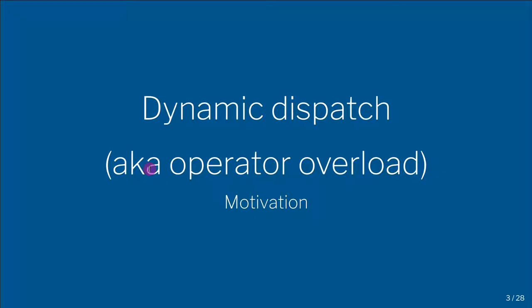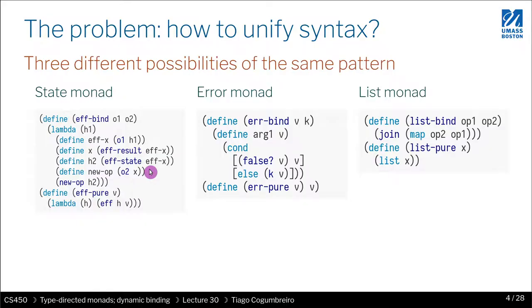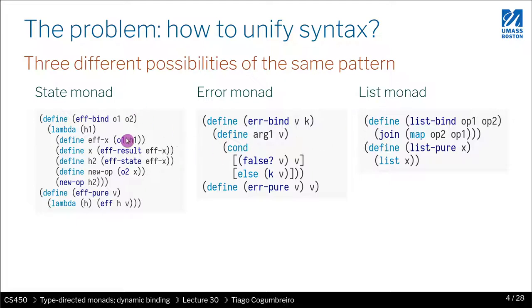I want us to get a bit of motivation for why we need dynamic dispatching. Let us recall the past work in our last few lessons. We've learned about the state monad, the error monad, and in the last lesson we've learned about the list monad. The difference between them is really what the operation is doing, but the interface is actually the same.